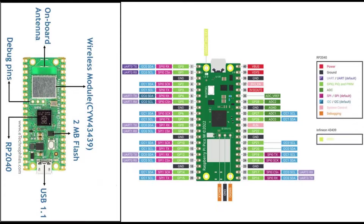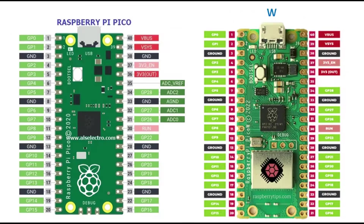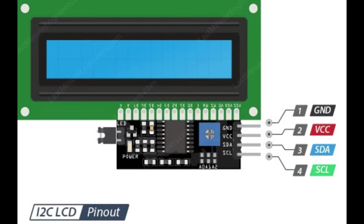Raspberry Pi Pico is a microcontroller board used to develop IT projects with a built-in Wi-Fi module. A 16x2 LCD can display 16 alphanumeric characters in a single line, and it has a total of two lines only.